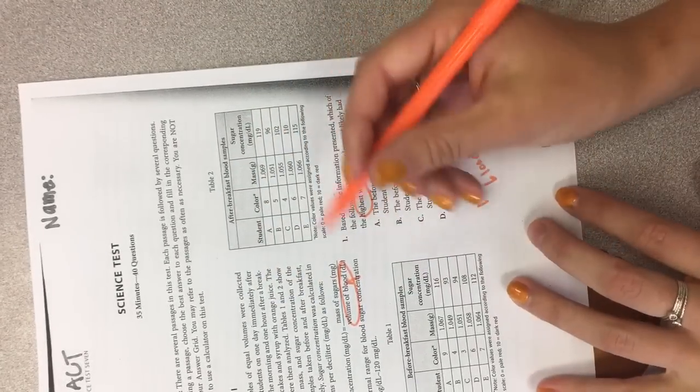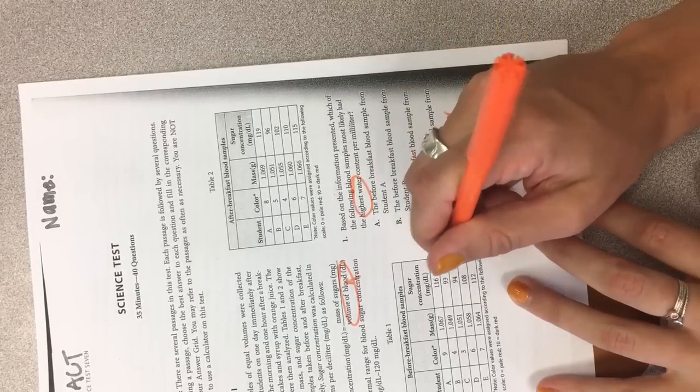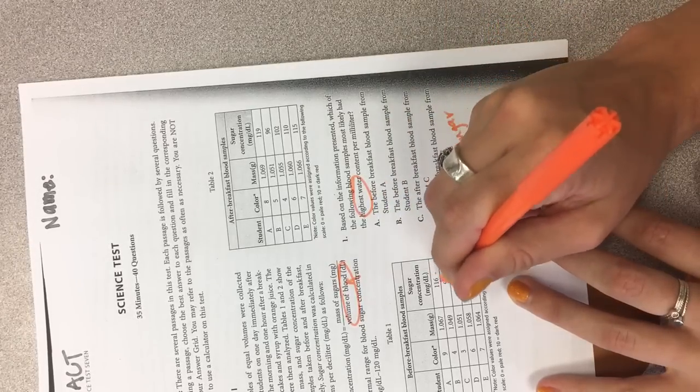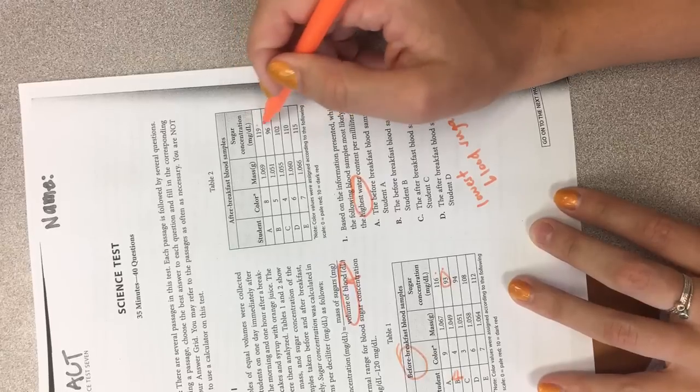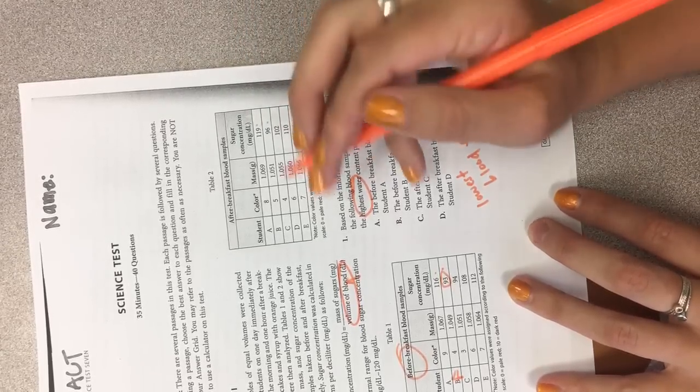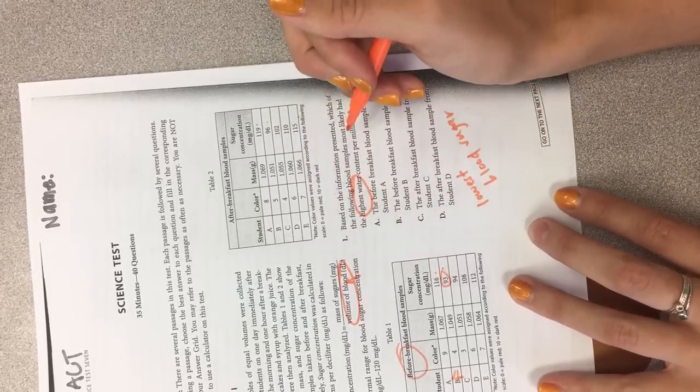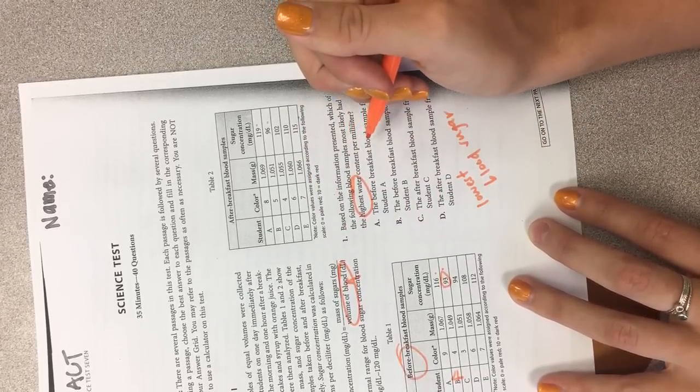So if we look at here, before breakfast, so 93 is our smallest, that's student B, and that's before breakfast. Yep, so this before breakfast blood sample of student B is low.